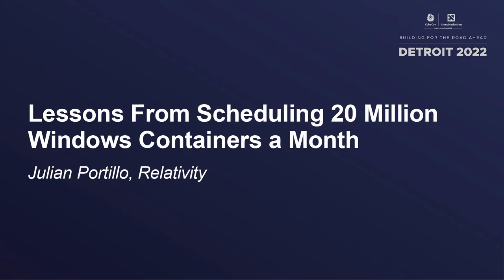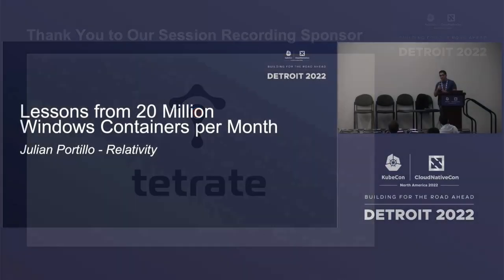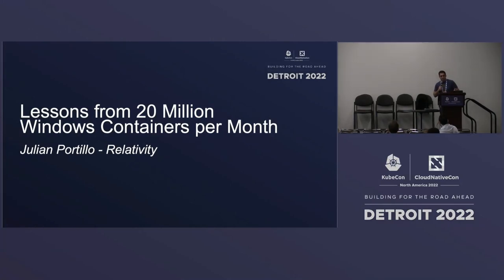Hi everybody. My name is Julian Portillo. I'm from Relativity — a small enterprise company that is making a migration from VMs into Kubernetes. We have run into a lot of foot guns, and hopefully we can help you not hit as many feet and instead hit targets.